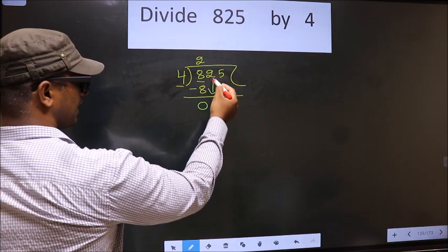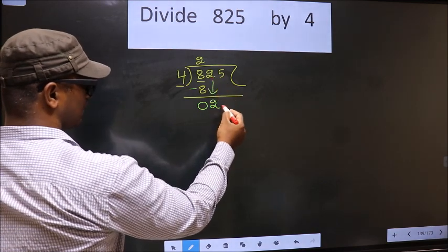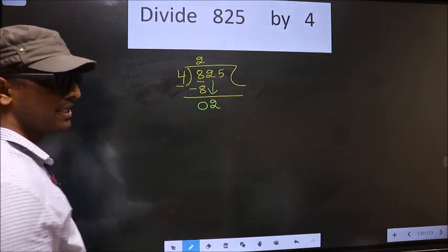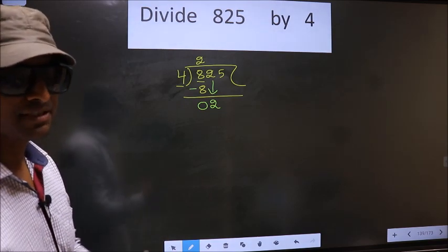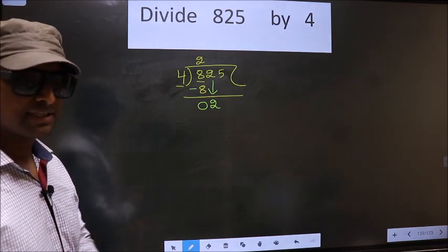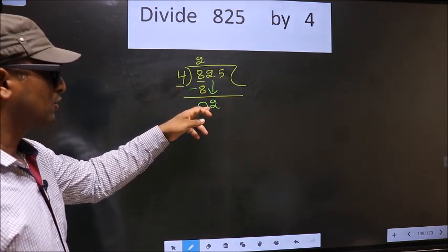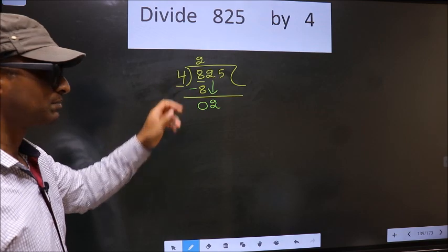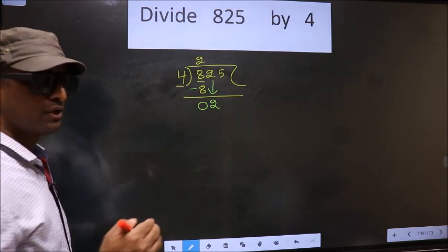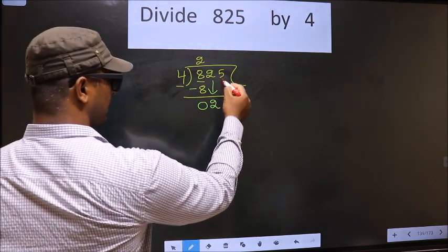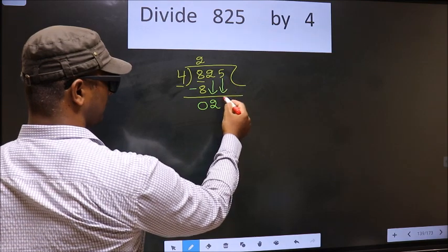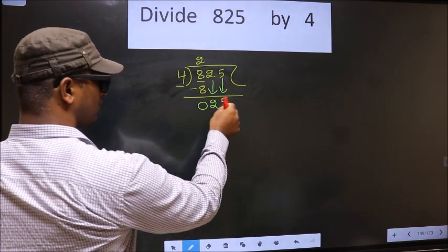Now you bring down the beside number. So 2 down. This is where the mistake happens. And the mistake is this. Here we have 2. Here 4. 2 is smaller than 4. So what many do is, they directly bring down the beside number. 5 down. Over here,